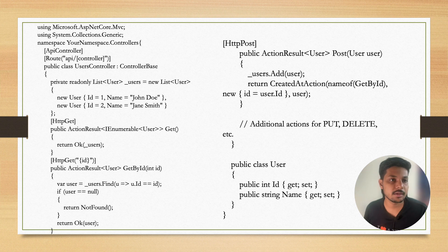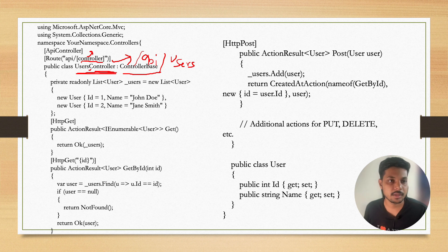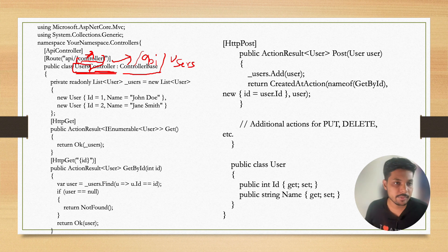Here's the code example. We're creating a controller class that inherits from ControllerBase. This is the route defined at the controller level — it uses a parameterized path, so the controller name is appended to it. The controller is called UsersController, so the route becomes api/users. By default in .NET, only the prefix before 'Controller' is appended in the route path.